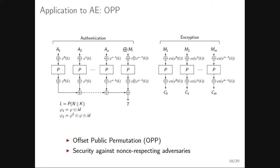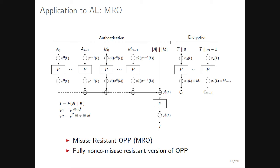The first application is OPP — the Offset Public Permutation mode — which provides security against nonce-respecting adversaries. It has an authentication part processing associated data and a message checksum. For example, the first block applies phi^0 to the base mask L, then updates the base value with LFSRs. Domain separation uses phi_1^2, where phi_1 is phi XORed with the identity. The encryption part follows a similar structure.